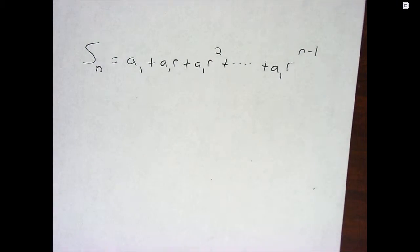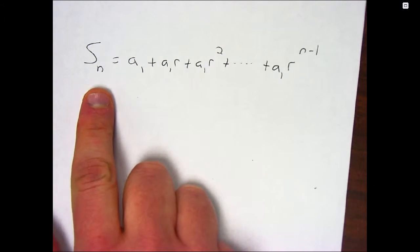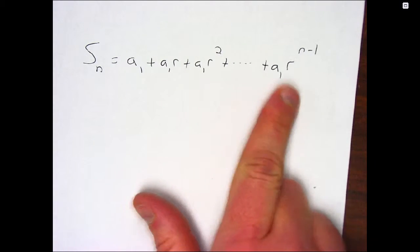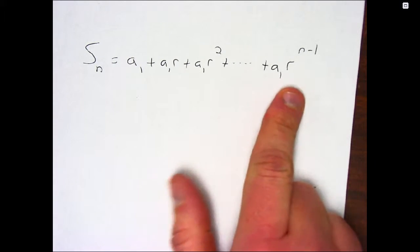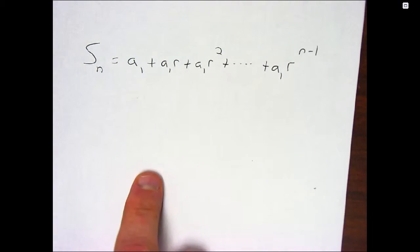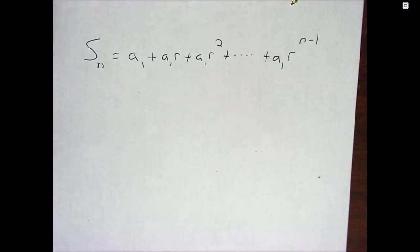Remember this notation, S sub n. And remember, if I start with a sub 1, then I keep multiplying by r in a geometric. And to get to the nth term, the exponent's only n minus 1. So I'm sort of lagging one behind. So there's a nifty trick for adding these up. And the trick is, if I take that whole sum and multiply by r...